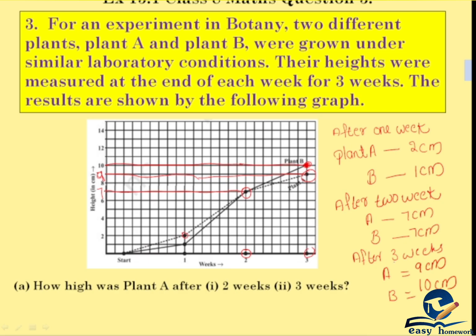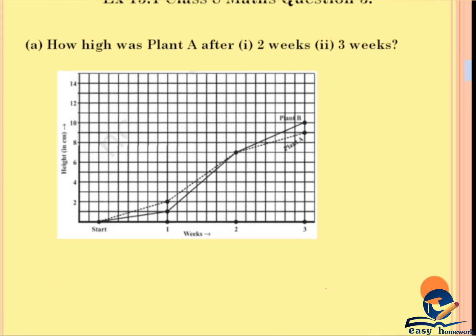The first question is: how high was Plant A after 2 weeks? Plant A after 2 weeks was 7 cm.